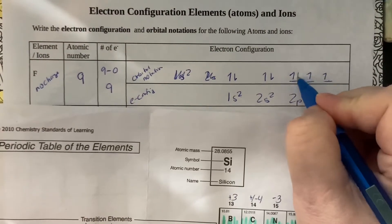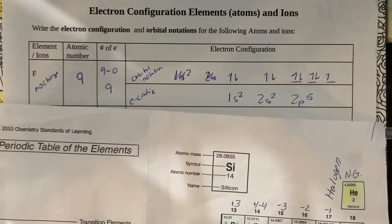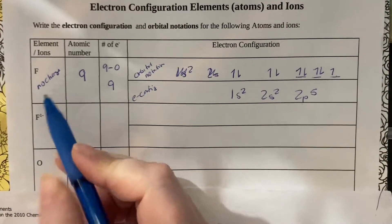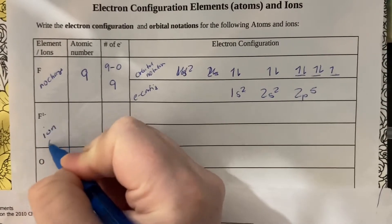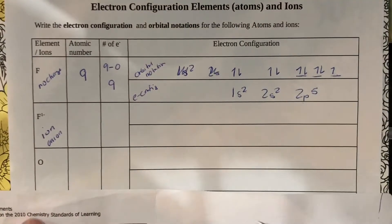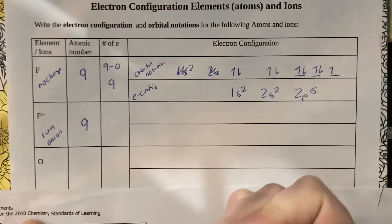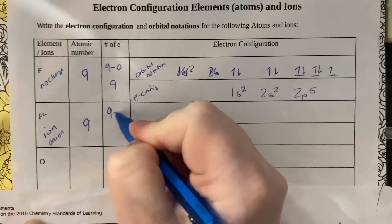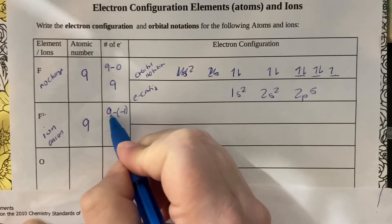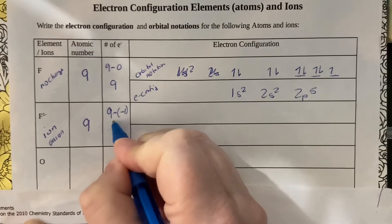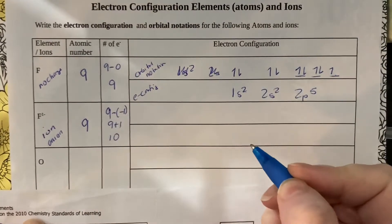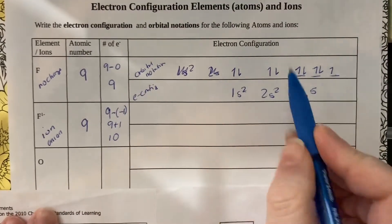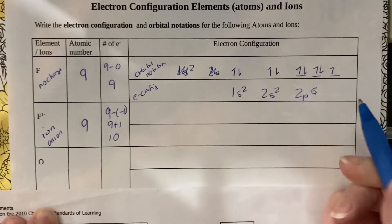Now the next guy is the fluorine ion because he has a charge, so he's actually the anion because he's negative. His atomic number is still nine—remember that's the fingerprint—but the number of electrons is now nine minus a negative one, or nine plus one, which is ten.